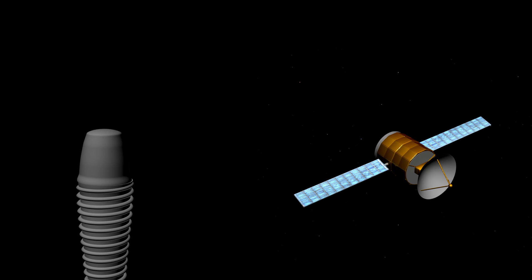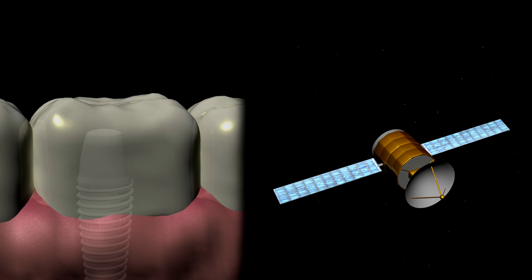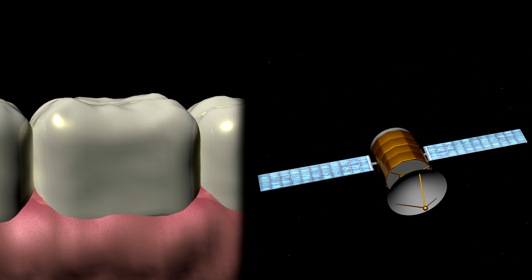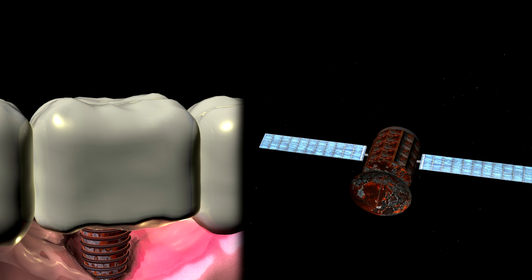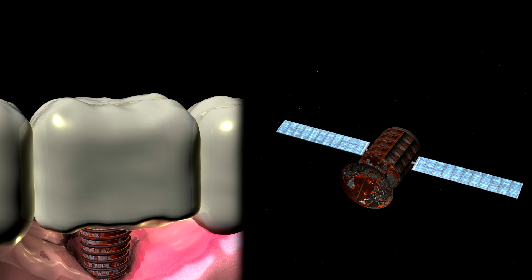Have you ever wondered what a dental implant and a satellite have in common? Neither of them will last forever, as the environment causes them to degrade over time. This process is known as corrosion.